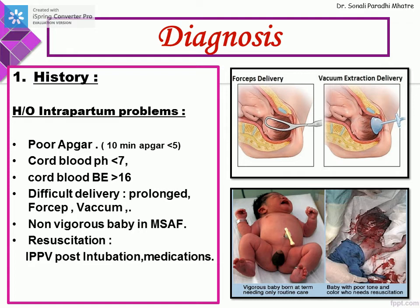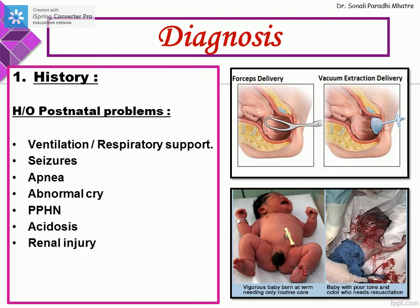Cord blood pH of less than 7 or cord base excess of more than 16 is an ominous sign. Difficult delivery, prolonged forceps, and vacuum extraction are high risks. A non-vigorous baby in meconium-stained amniotic fluid — meconium aspiration syndrome — is also high risk. The mode of resuscitation used — IPPV, post-intubation, or medications used for neonatal resuscitation — points toward bad prognosis. Postnatal: history of ventilation, seizures within the first 24 hours, apnea, abnormal cry, PPHN, acidosis, or renal injury.